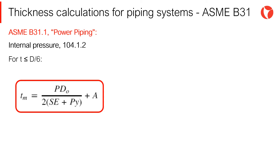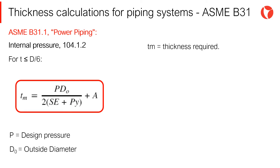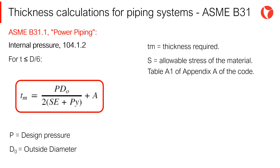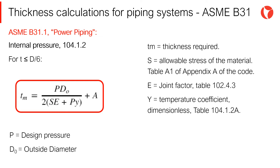In accordance with the ASME B31-1 code, the thickness required for straight sections of pipes under internal pressure is given by the following equation. The required thickness Tm is equal to the following variables: P, the design pressure; D, the outside diameter; S, the allowable stress of the material; E, the joint factor; Y, the temperature coefficient; and A, the sum of tolerances.